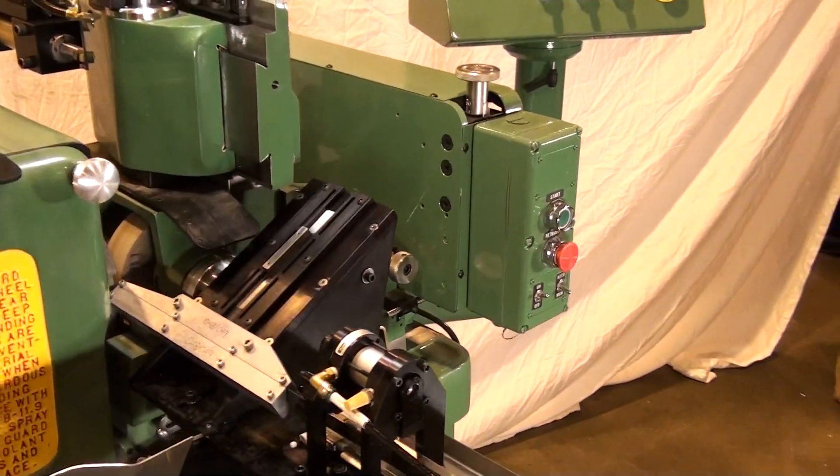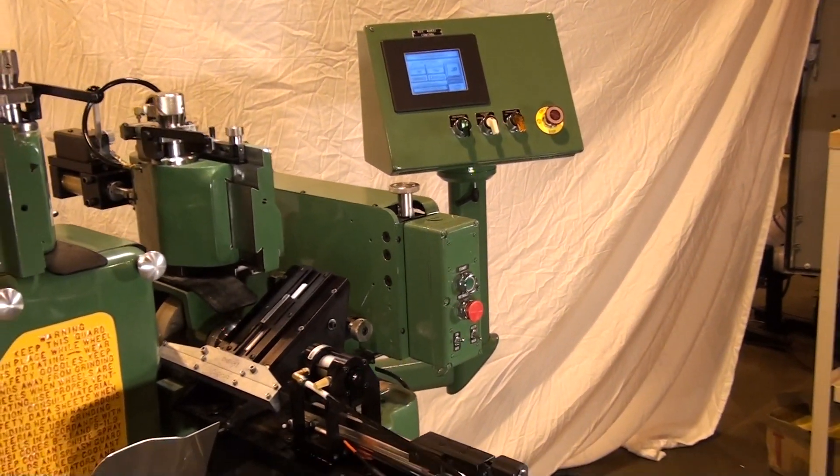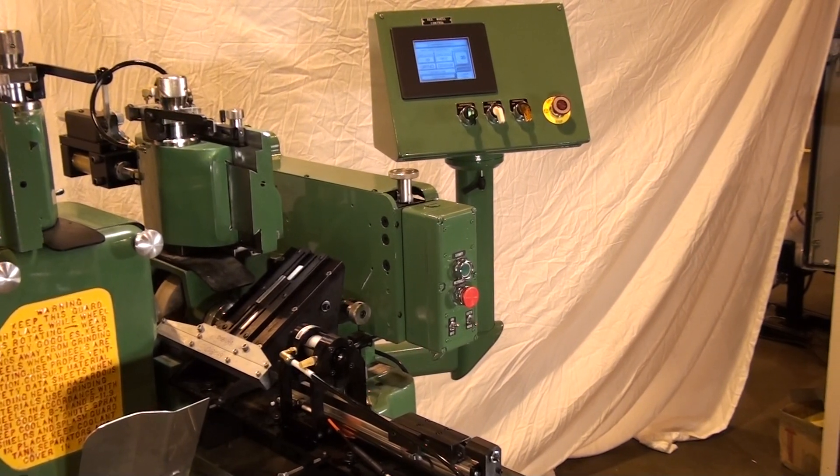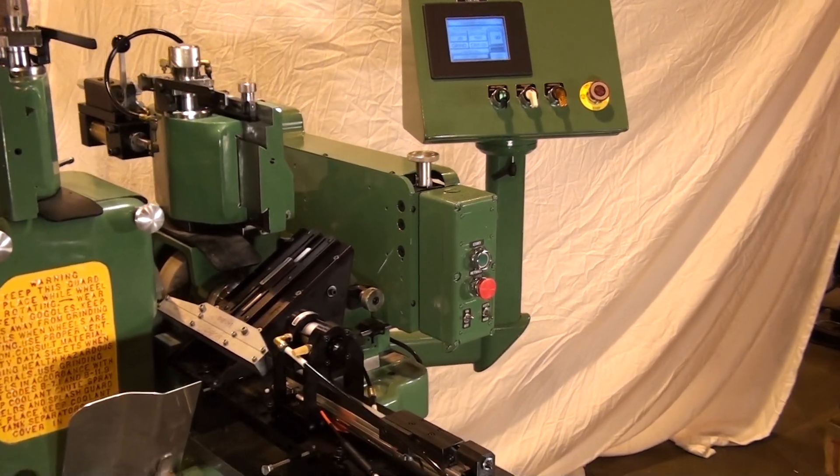The standard Model TG12x4 with Auto Cycle Unit is capable of fast setups and simplified changeovers, repeatable and fast cycle times, and capable of most any part grinder.